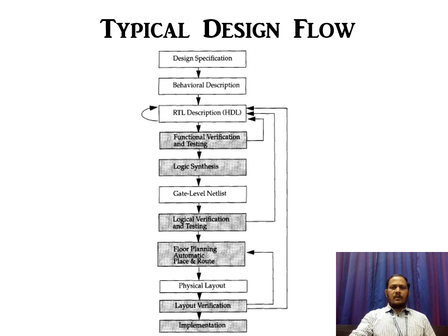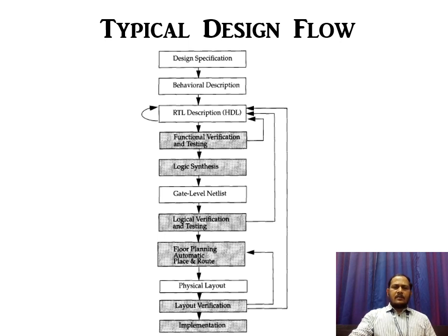In digital electronics lab, you start with a truth table. Then you solve that truth table using K-map or Quine-McCluskey methods to get a Boolean expression. From the Boolean expression you convert it into circuit level. After that you wire up the nodes, get the ICs, connect them with patch cords, and test using a logic trainer kit.